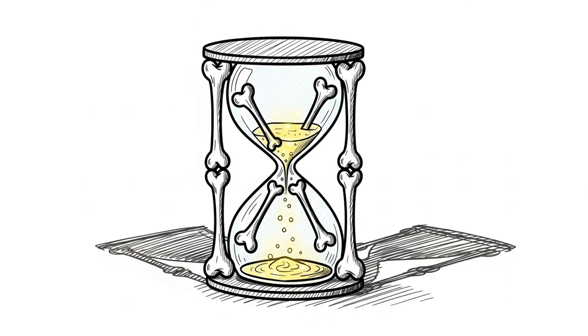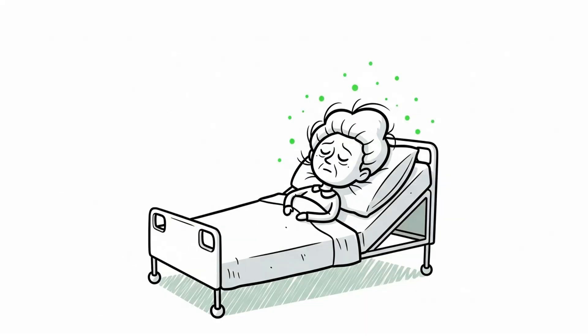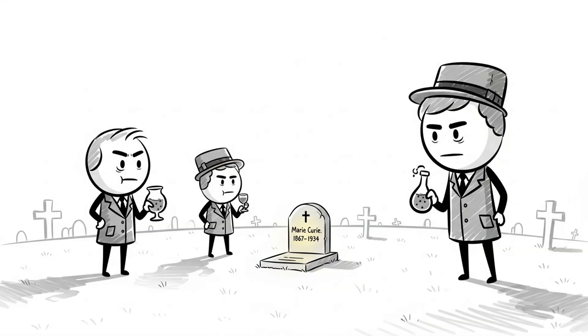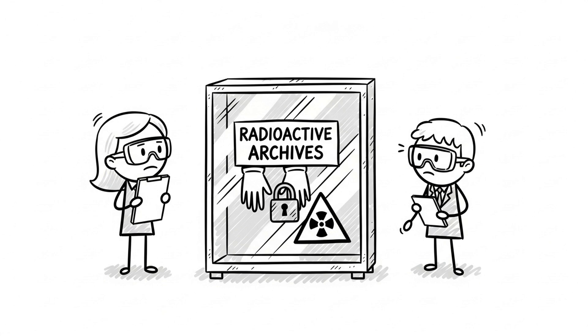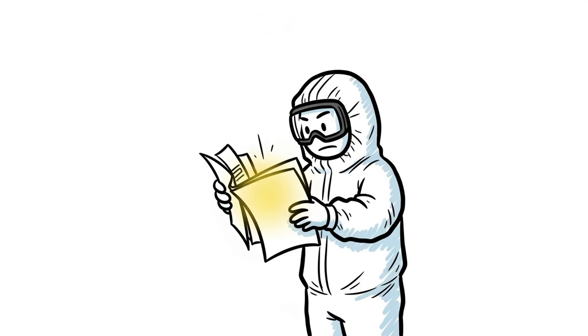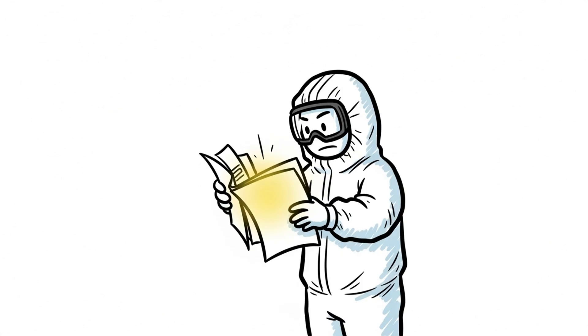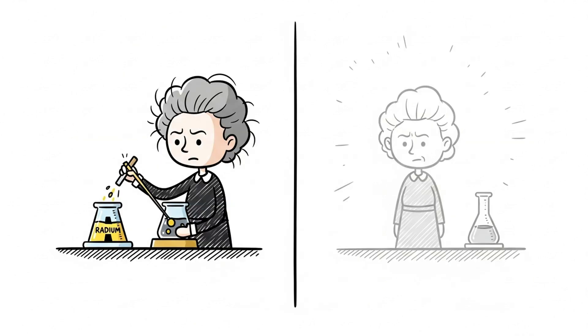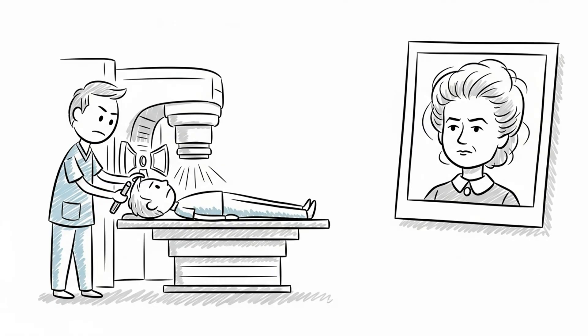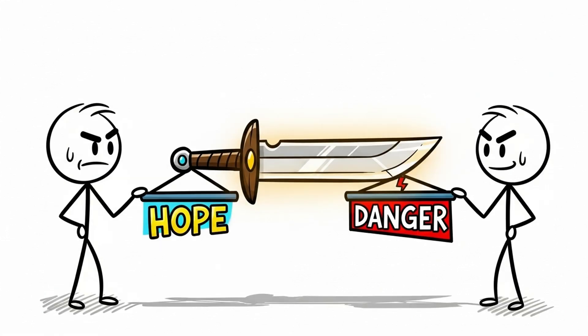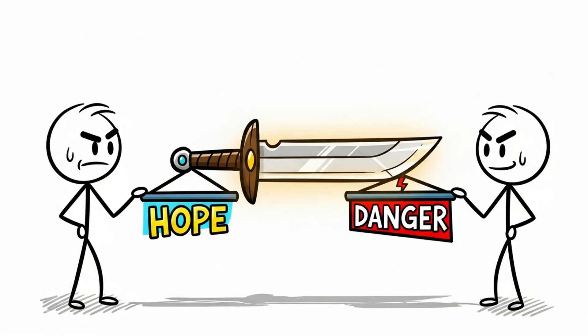Years of unprotected exposure had taken a silent toll. Eventually, she developed aplastic anemia, a condition linked to radiation damage. She passed away in 1934, never knowing the full extent of what radiation had done. To this day, her old notebooks remain dangerously radioactive. Visitors to her papers must wear protective gear. Marie Curie didn't just unlock the power of atoms, she lived and died by them. Her legacy lives on in cancer treatment, nuclear physics, and the lessons of caution. Sometimes science is a double-edged sword. And few carried both edges more gracefully than Marie Curie.